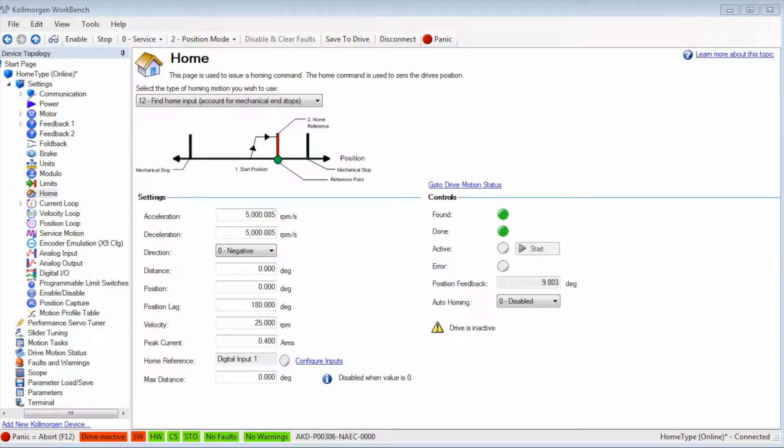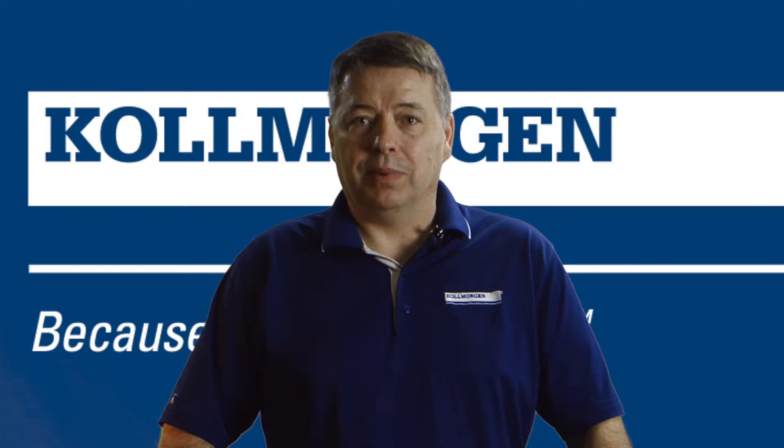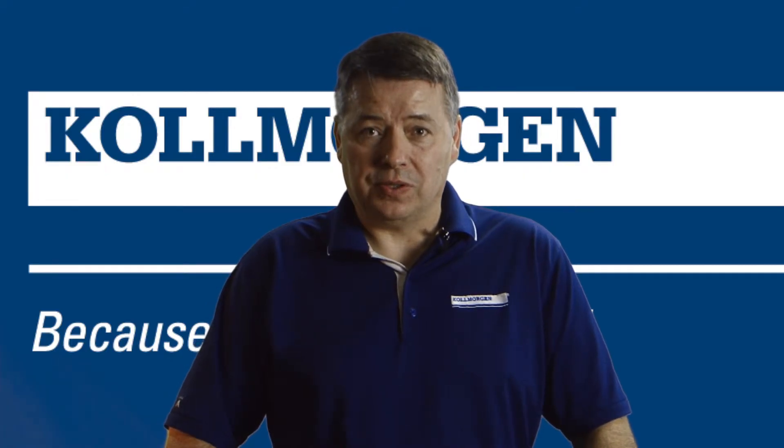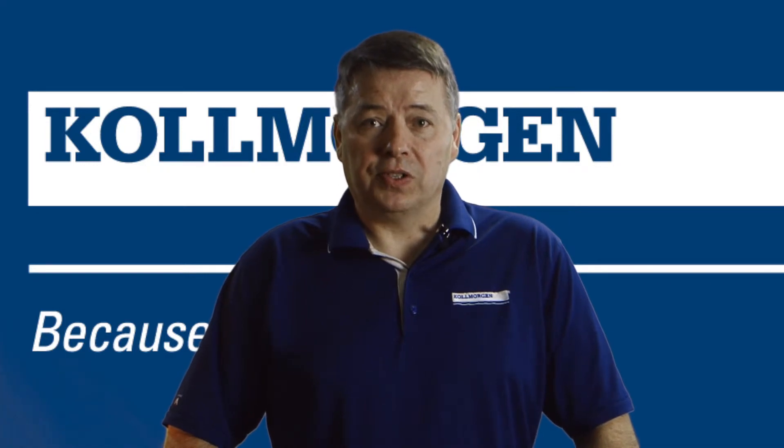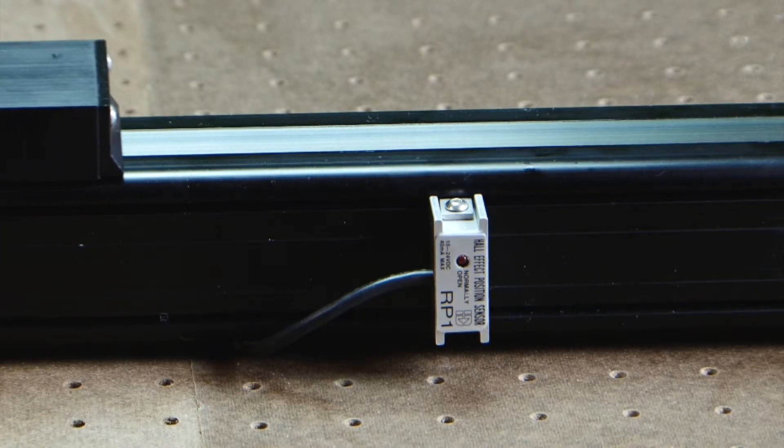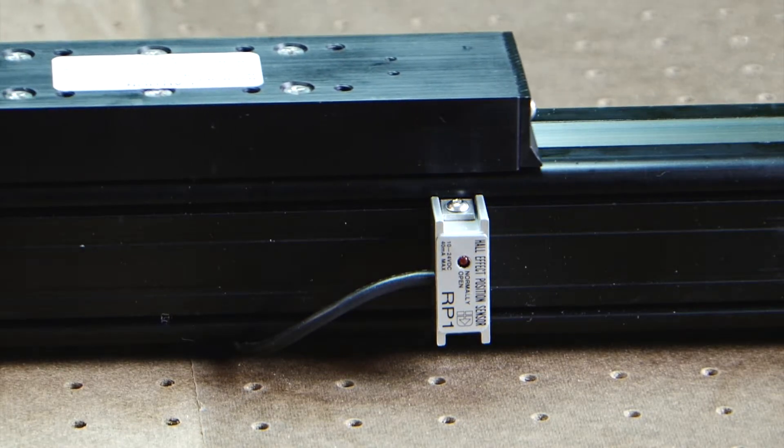Home type 12 works very similar to home types 4, 5 and 6, except that the end of travel is defined by the hard stop, not by the end of travel limit switches. The setup is very similar to that of home types 4, 5 and 6 and will react very much the same.